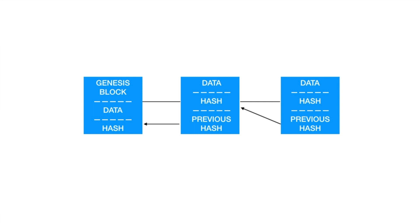The third block also has data, a hash, and a previous hash. Again, the previous hash should be the same as the hash from the block before, to connect the blocks together.